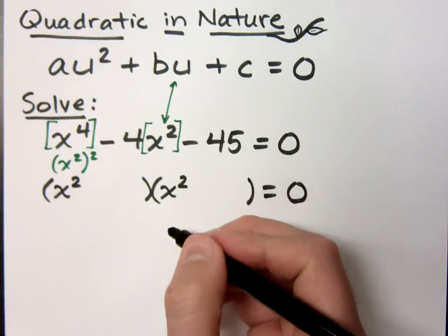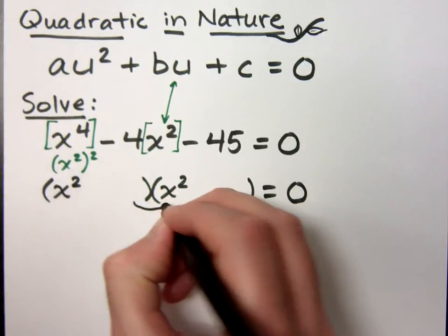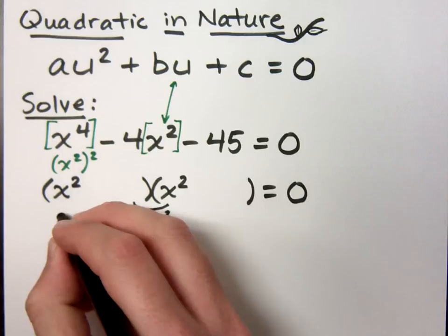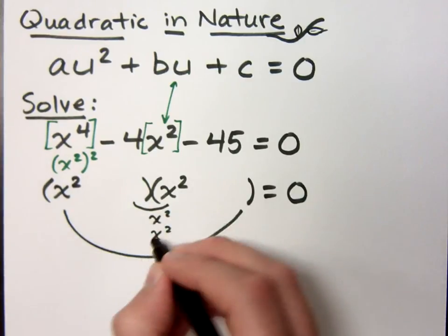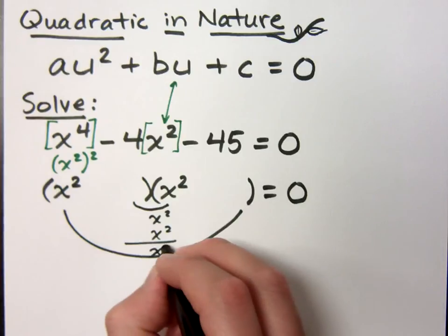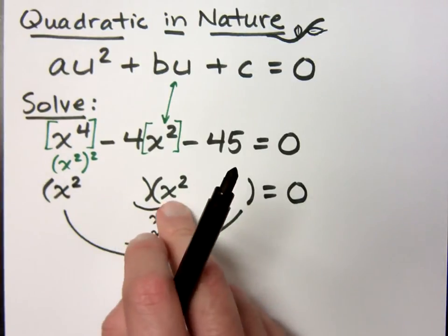Now that's not the only way to break down x⁴. You could use x³ times x. But you have to make sure that what you get here on the inside and the outside, whenever you are foiling, these guys must both be x² terms to combine and get x² in the middle. So that's why I want to split this up evenly with x² and x².